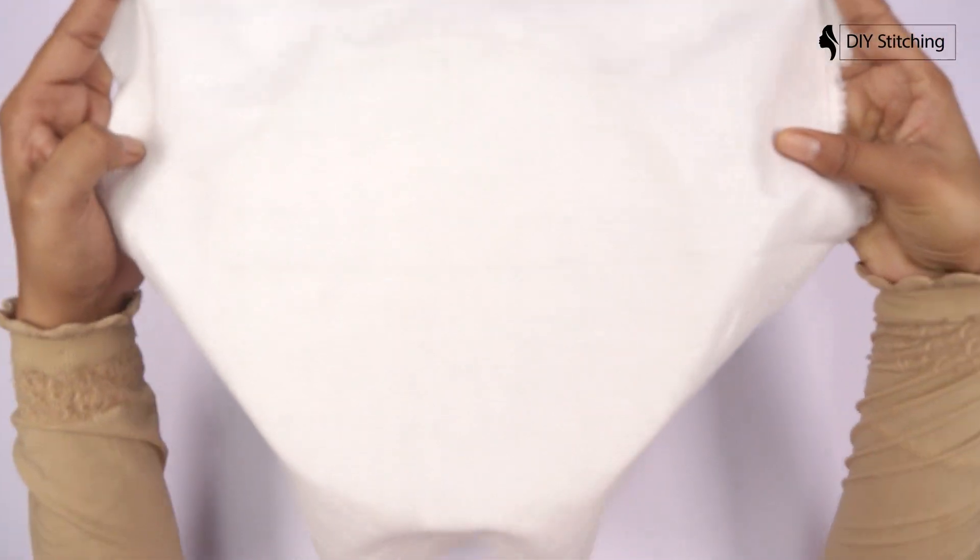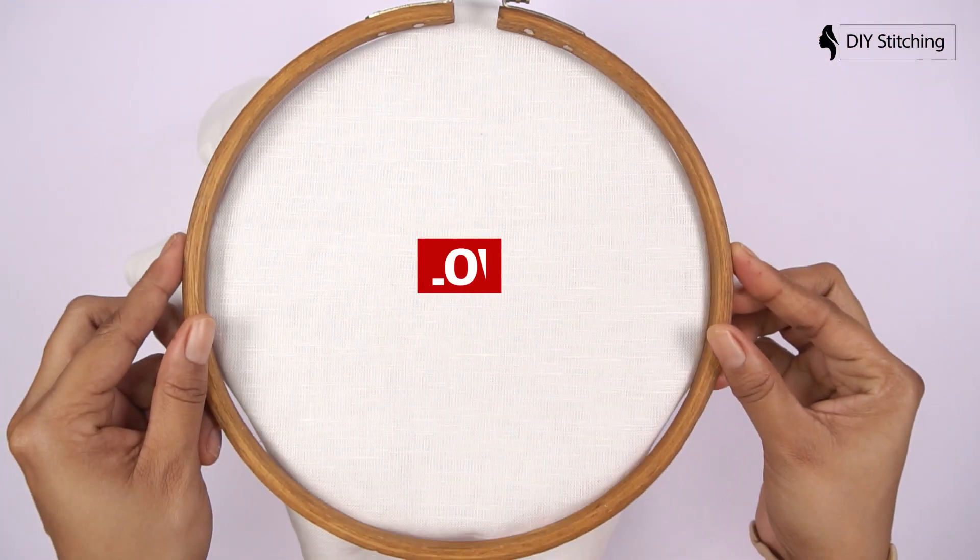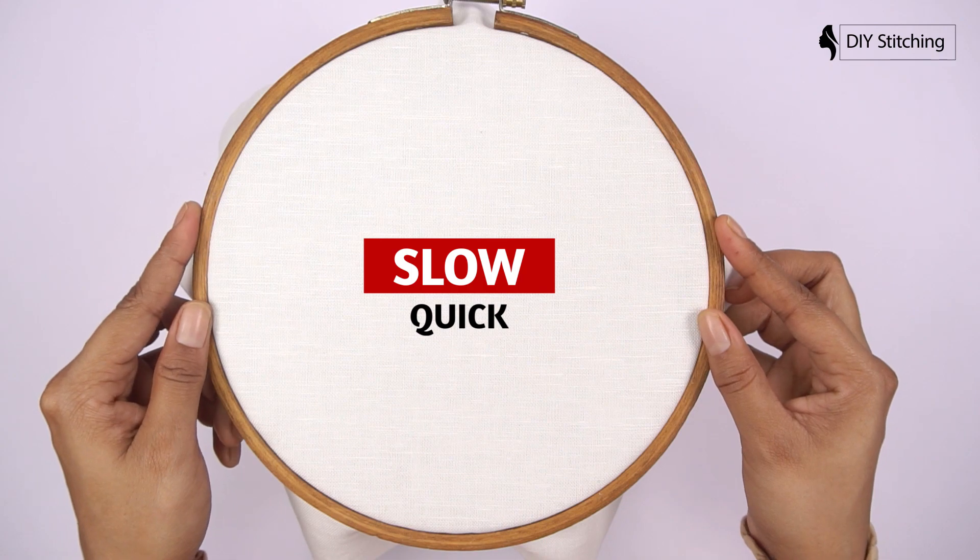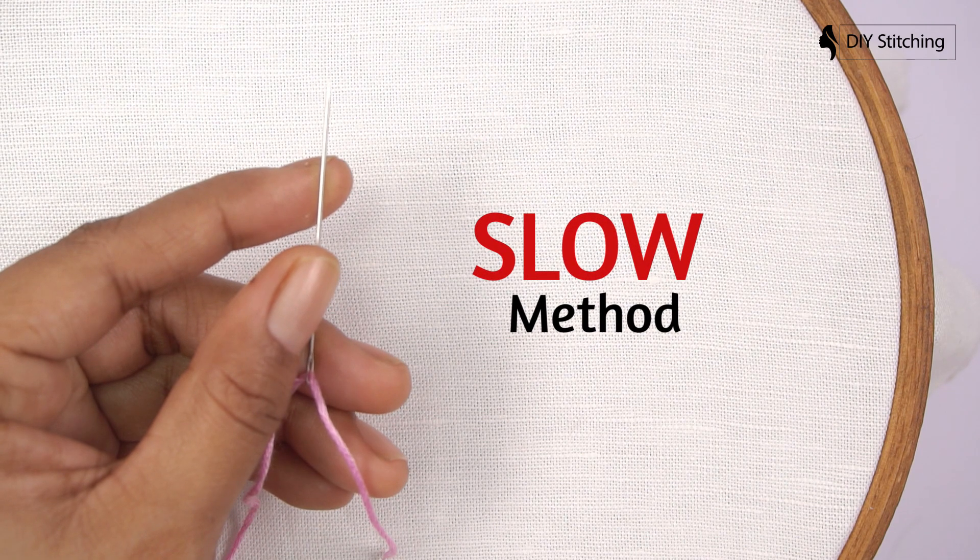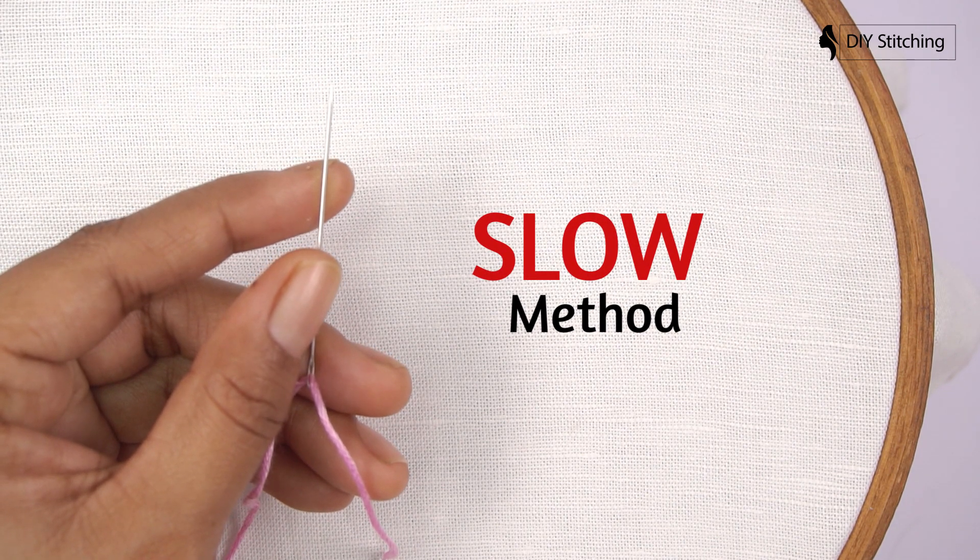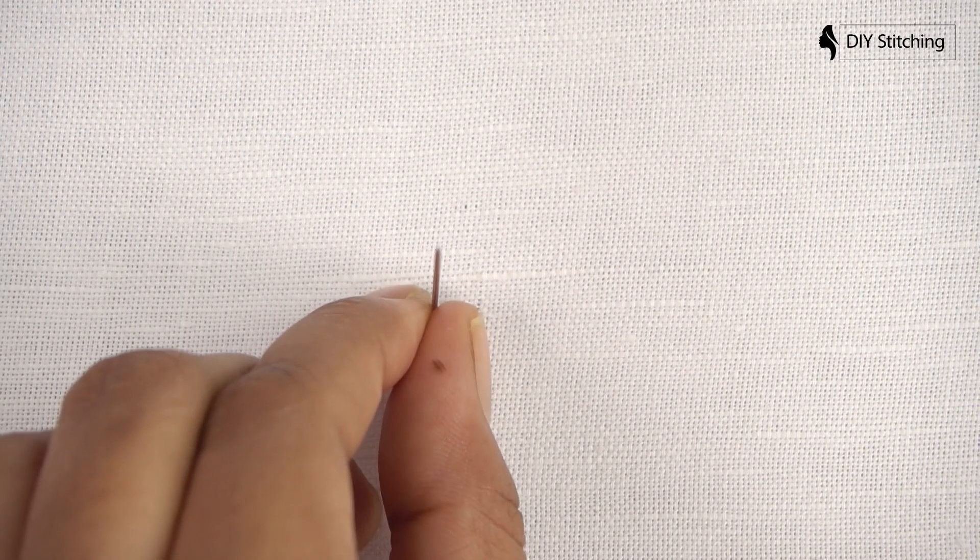Hi friends, today we are going to learn slow and quick methods in embroidery. Let's start with Boolean knot slow methods. I'm using an embroidery floss.